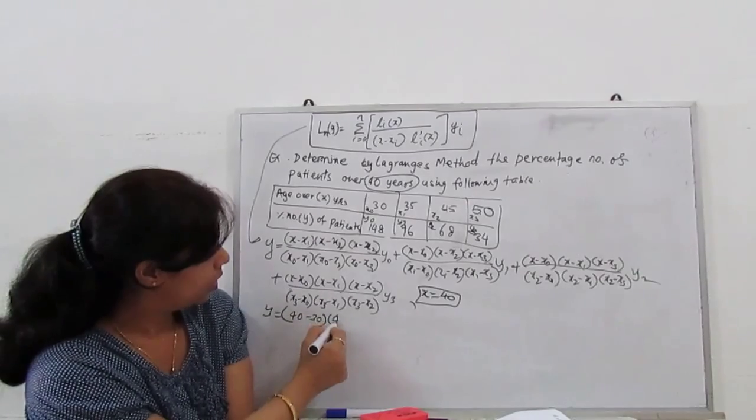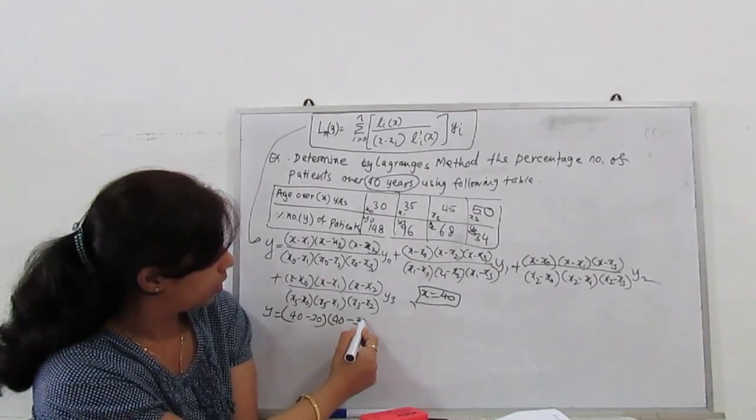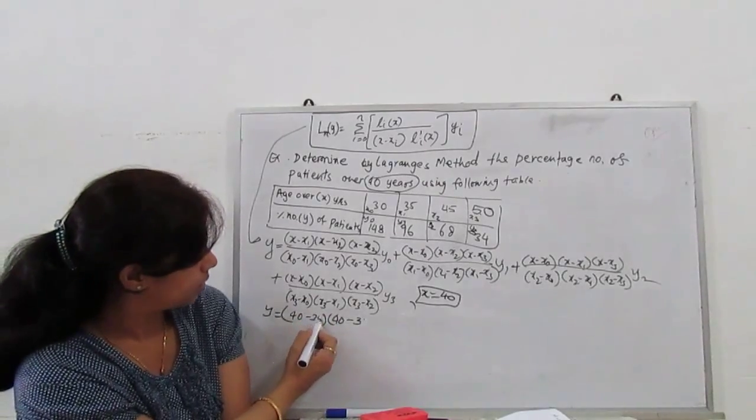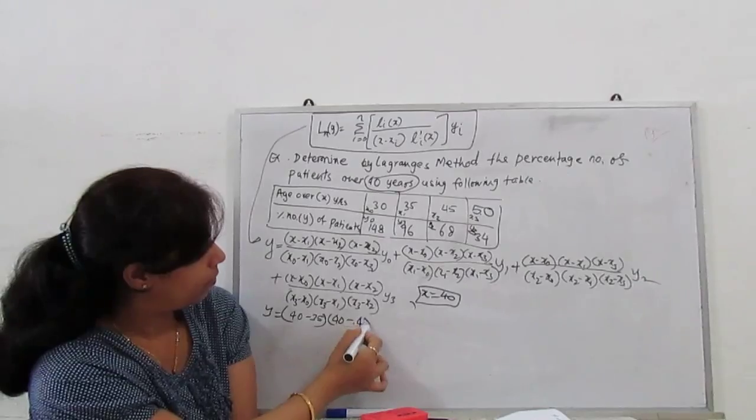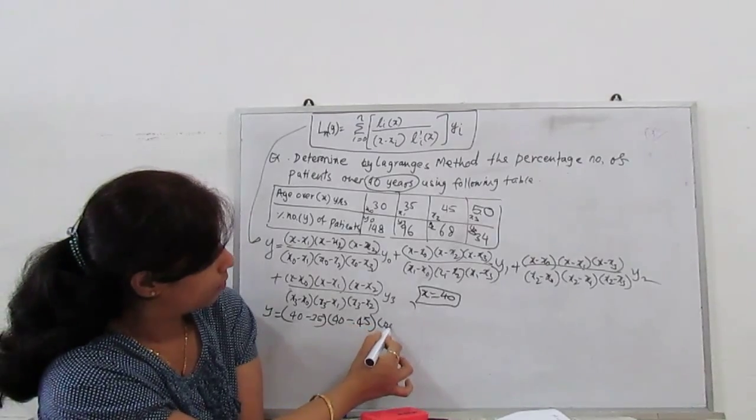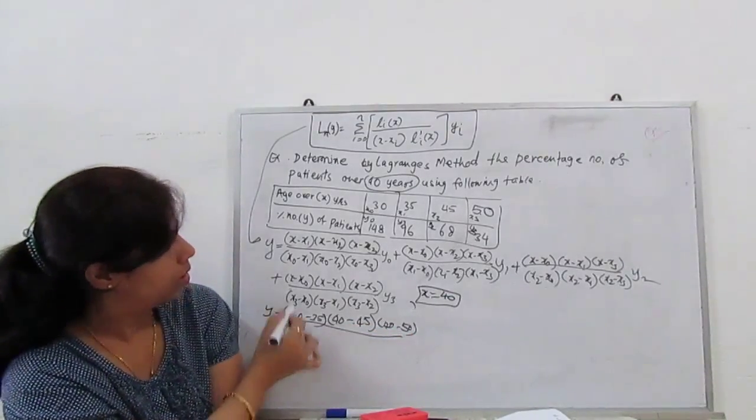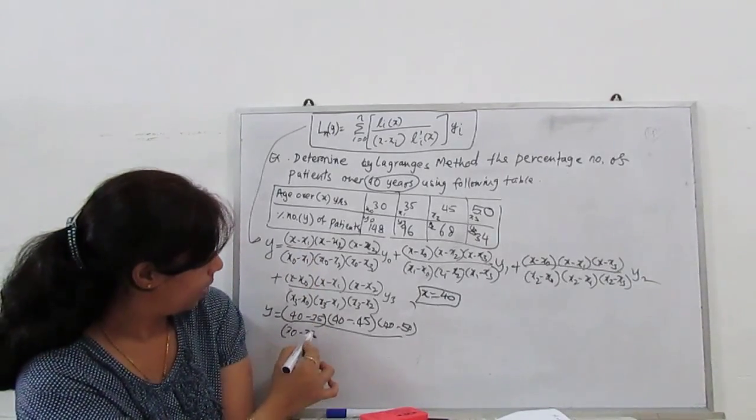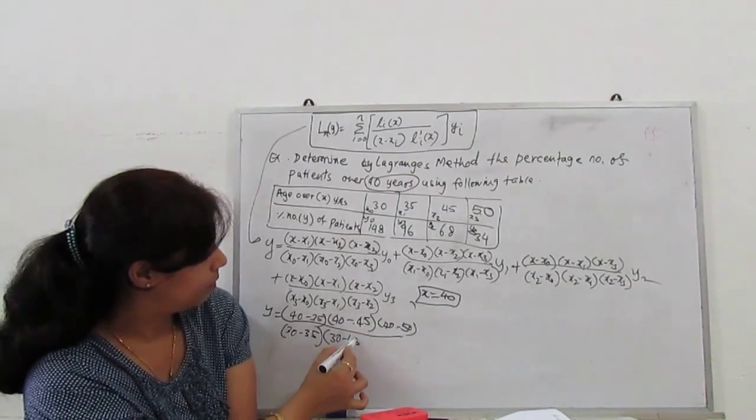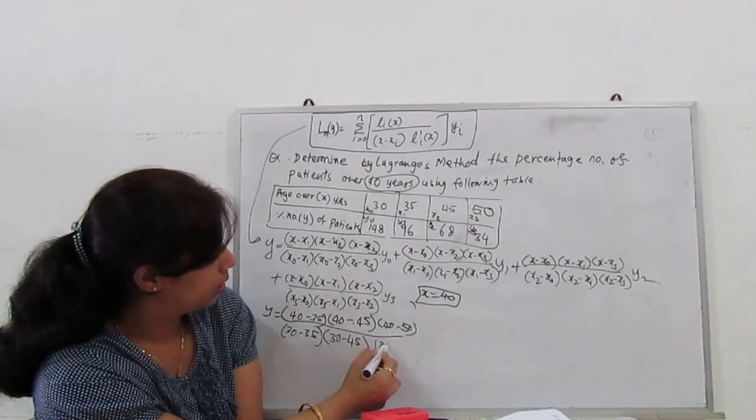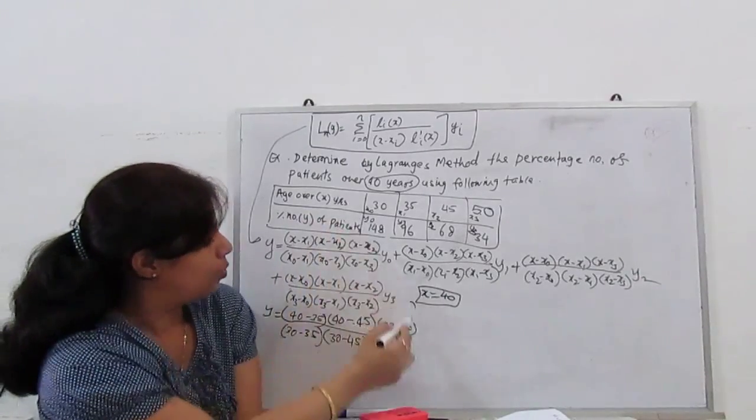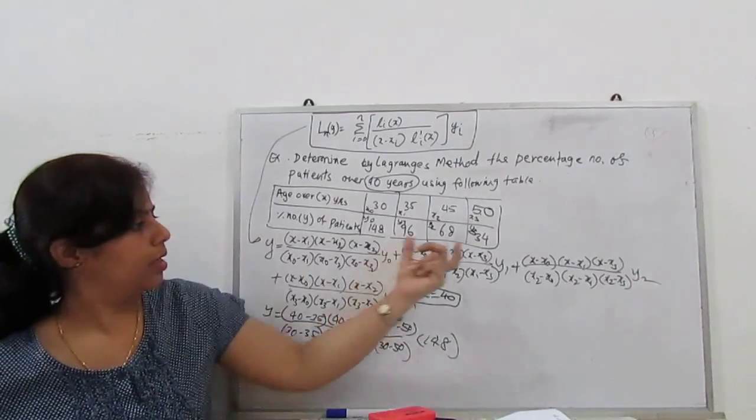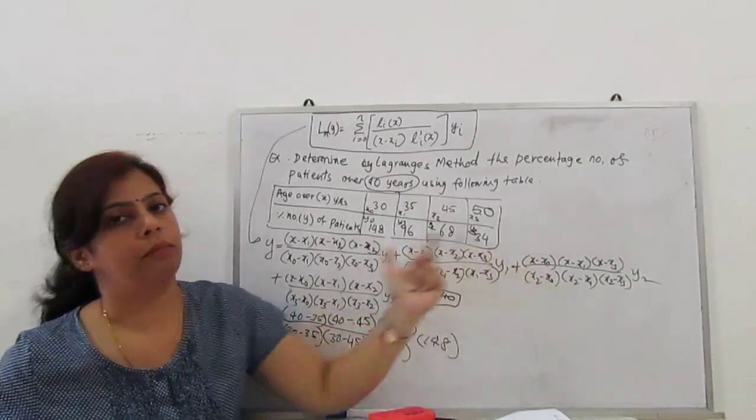x0 is 30, x1 is 35, x2 is 45, x3 is 50. Substitute: y equals (40-35)(40-45)(40-50)/(30-35)(30-45)(30-50) times y0 which is 148.